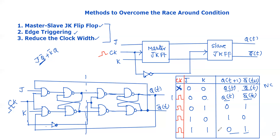So we have three different methods to overcome the race-around condition. These three methods are purely theoretical topics. You can study the circuit diagram, characteristic table, equations, and excitation table for the Master-Slave JK flip-flop as part of your preparation.